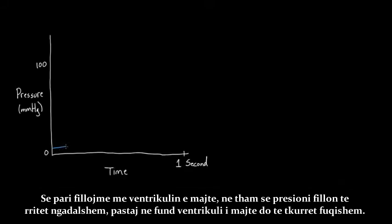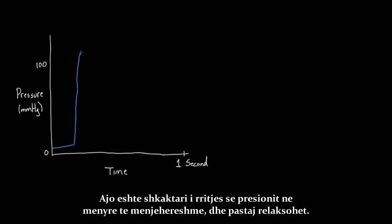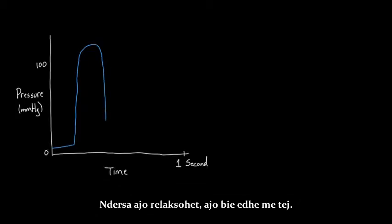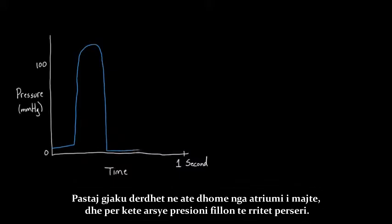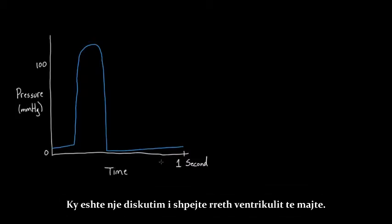First, the left ventricle. The pressure rises slowly, and then the left ventricle contracts really hard — that's the real cause of the pressure rising abruptly. Then it relaxes, and as it relaxes more the pressure falls. Blood reaccumulates from the left atrium into that chamber, and that's why the pressure goes back up again. So that's a quick overview of the left ventricle.